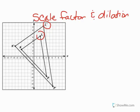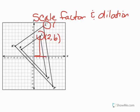After I choose my point, I now need to find its location. So I'm going to first look at L. When I look at L, I can see the location of L is (2, 6) — that means I went over 2 and up 6. That's the ordered pair or the location for L. Then I'm going to look at L prime, which is my new image. Starting at the origin, I went over 3 and up 9.